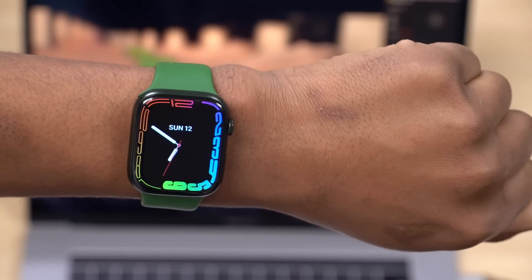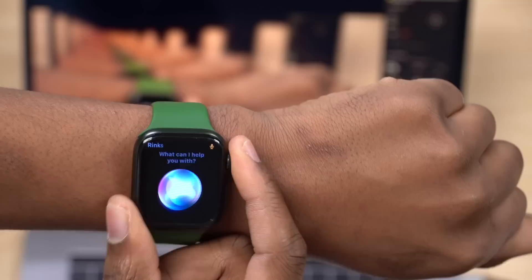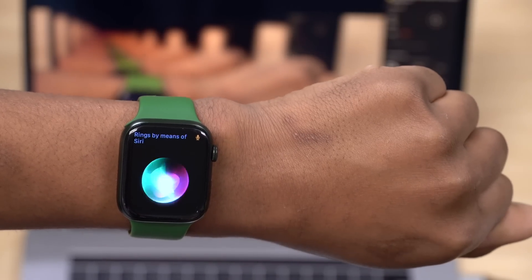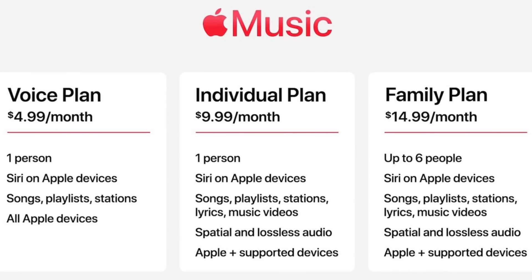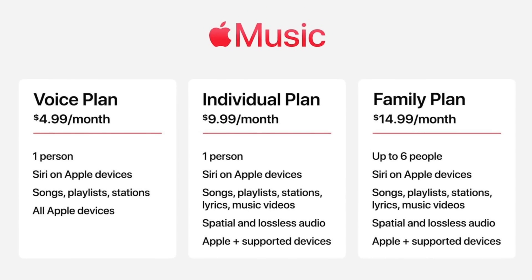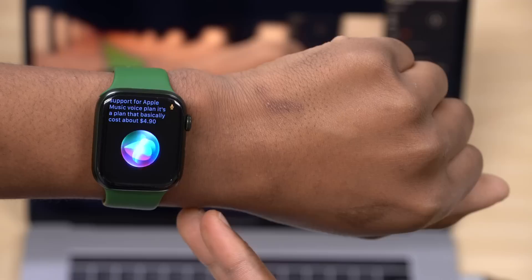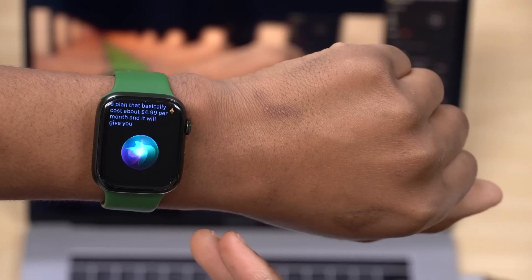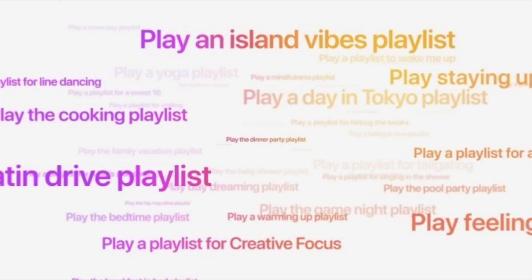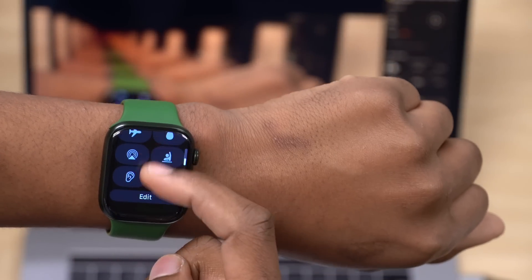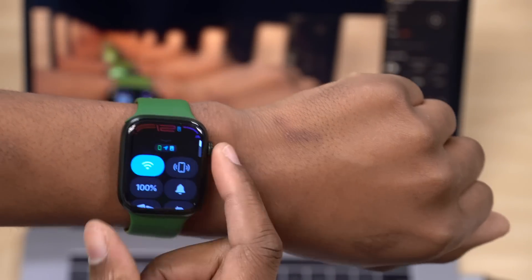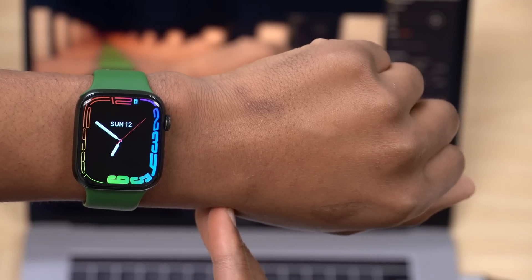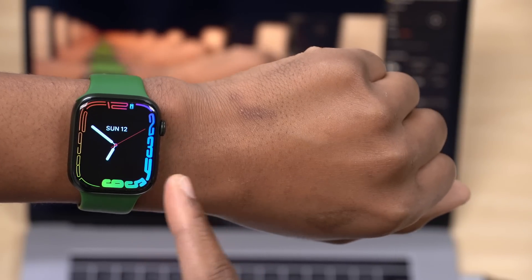Another feature WatchOS 8.3 brings by means of Siri is added support for Apple Music Voice Plan. It's a plan that costs about $4.99 per month and gives you the ability to use Siri to activate your music or playlists. If you have AirPods or other connected devices, you can easily use your music through Siri, and this is now supported on WatchOS 8.3.